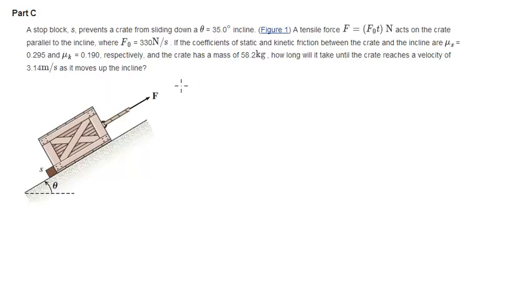Alright guys, now we're going to do Part C of the Principle of Linear Impulse and Momentum Problems. In this problem, a stop block S, right here, prevents a crate from sliding down an incline which has an angle of 35 degrees. A tensile force of F0 times T in newtons acts on the crate parallel to the incline trying to pull it up the incline and they give you the value of F. So they're basically giving you the function.